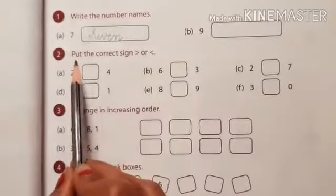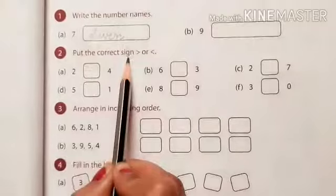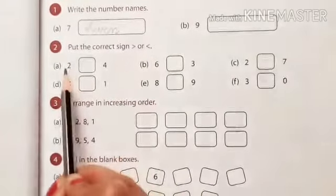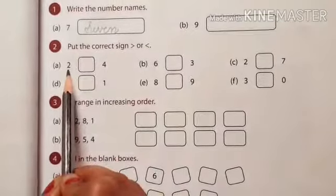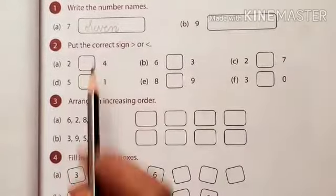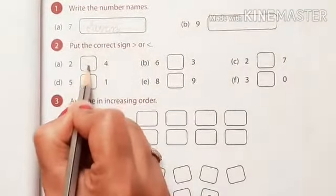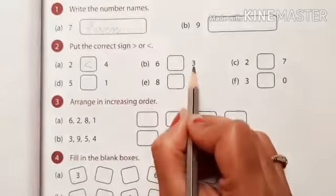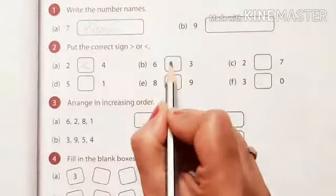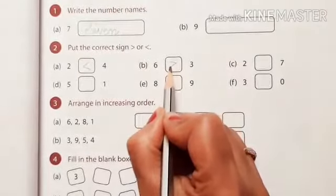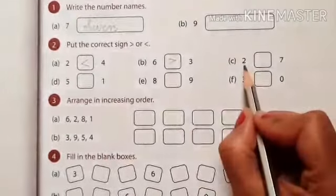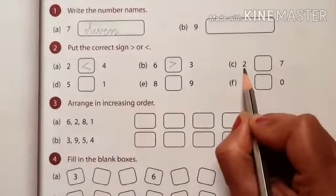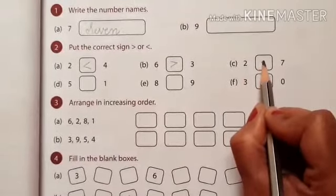Number 2. Put the correct sign, greater than or smaller than. Now first sum: 2 and 4. 4 is greater than 2. Now next sum: 6 and 3. 6 is greater than 3. Now next sum: 2 and 7. 2 is smaller than 7.